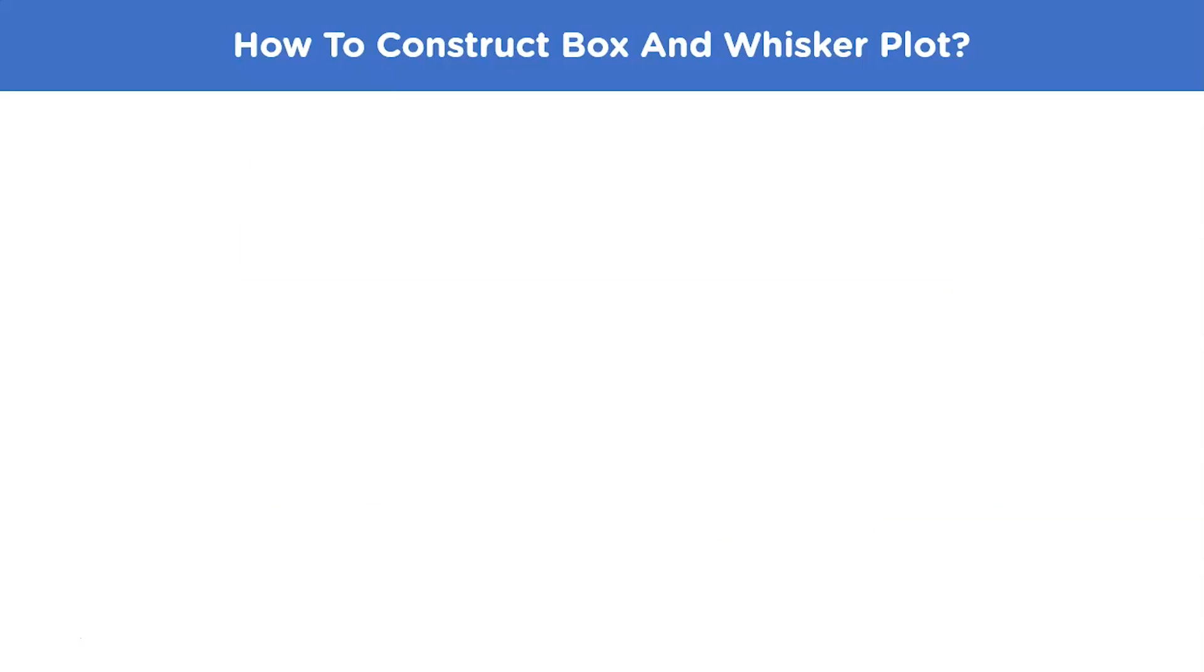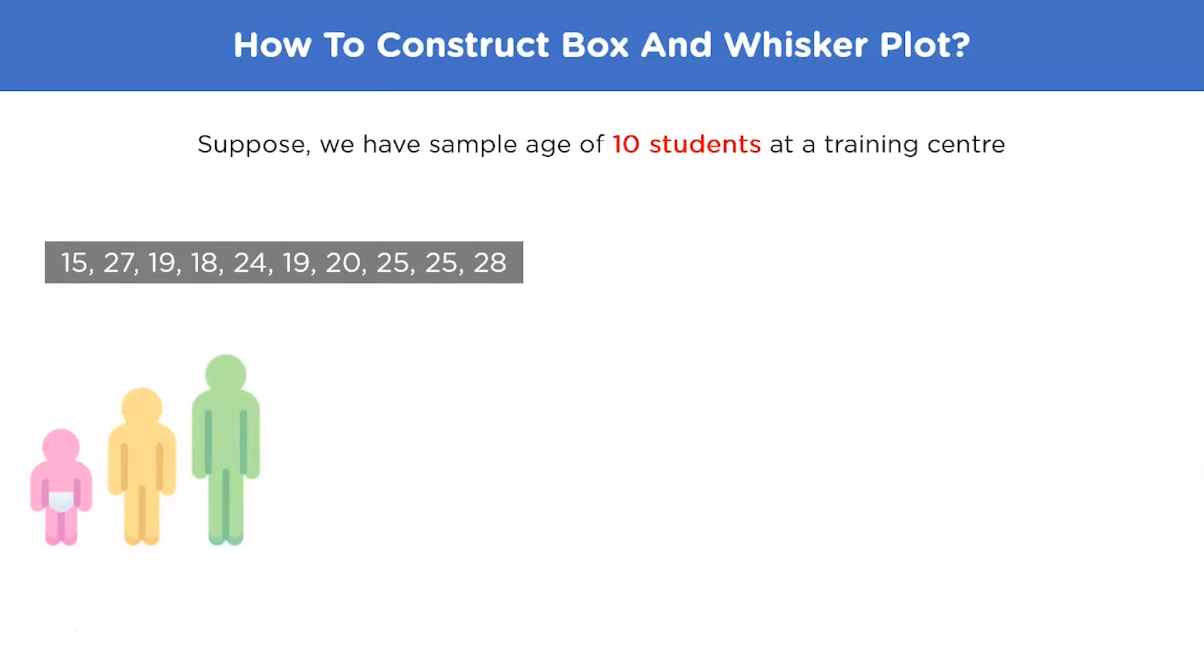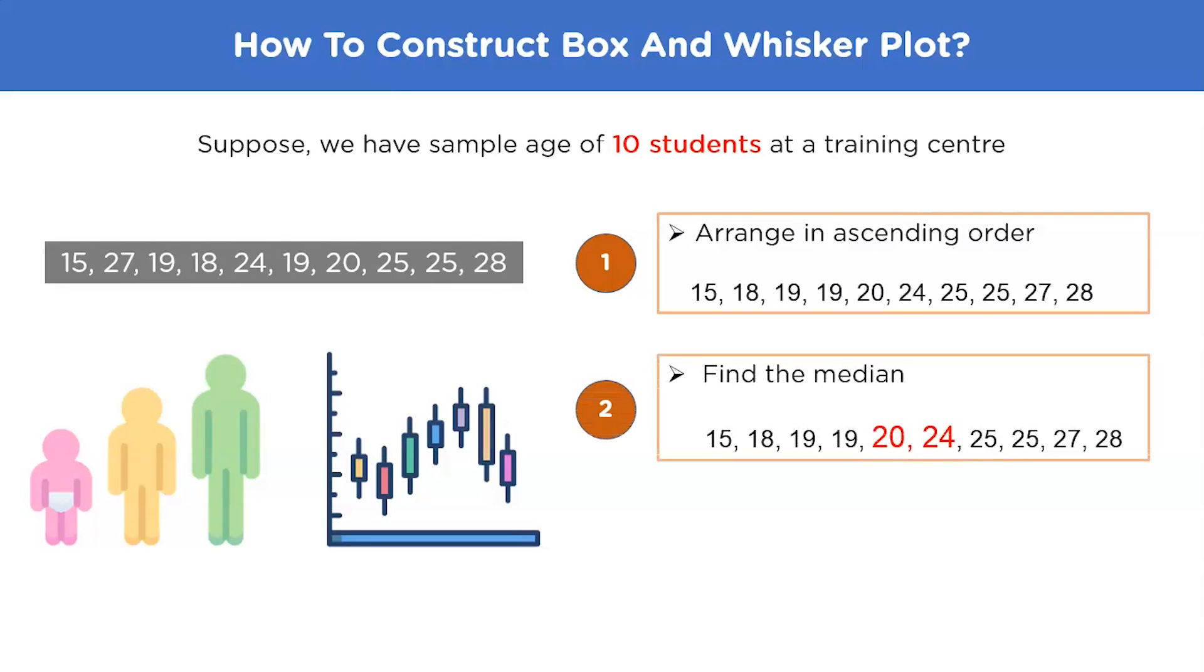let's move on to an example to see how you can construct a plot in a systematic manner. Here we have a sample age of 10 students at the training center. So the first step would be to arrange the data in ascending order. The second step is to find the median of the data set. Since there are even number of terms, we'll find the average of the middle two terms. So adding 20 plus 24 and dividing it by 2, we get the average as 22, which is also the median of our data set.